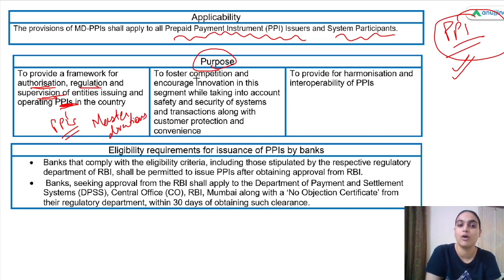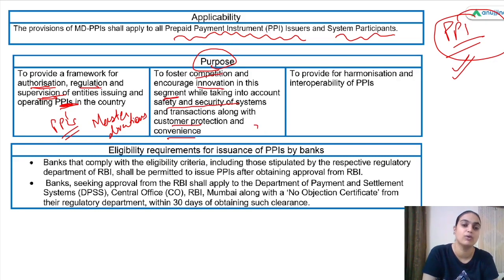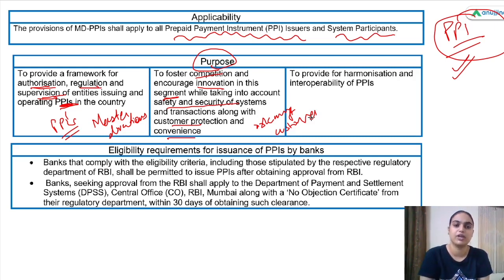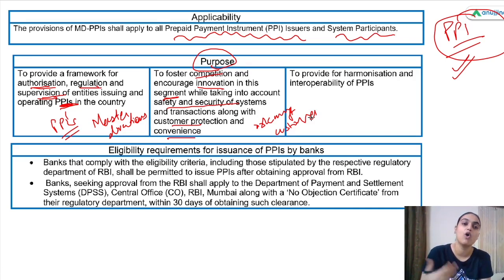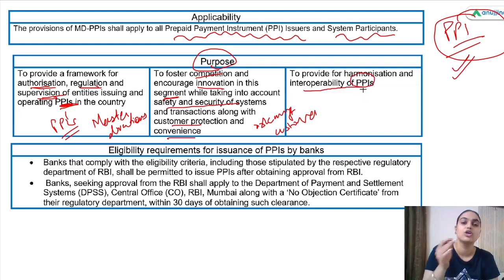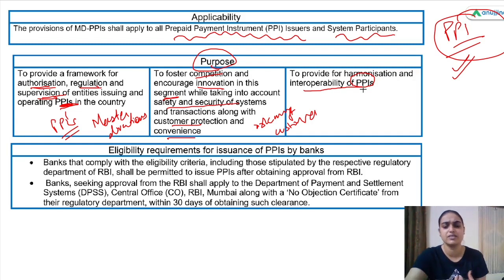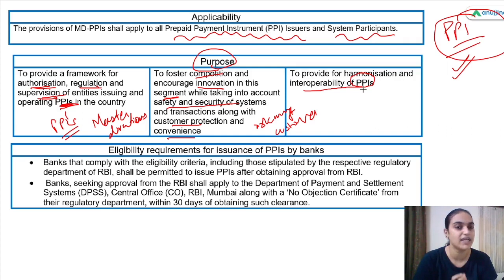Another purpose is to foster competition and encourage innovation in this segment by focusing on safety, security of the systems, and customer protection and convenience. This set of master directions talks about how risks will be managed, how customer protection needs to be ensured, and what grievance redressal mechanism should be followed. It also provides for harmonization and interoperability of PPIs — facilitating exchanges and interconnectivity between them.